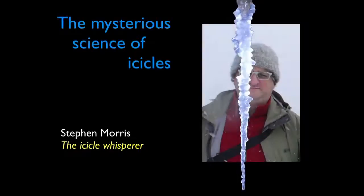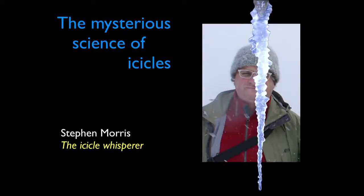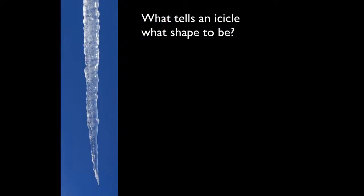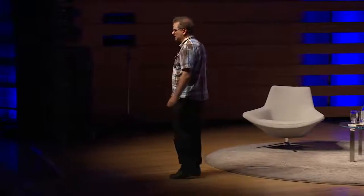What I like is the icicle whisperer. The question I'd really like to talk about — the one that's been obsessing me for all these years — is: what tells an icicle what shape to be? How does an icicle know what shape to be? There's nothing outside the icicle that informs it that it should be long and pointy. It just decides to be long and pointy. How does it decide?